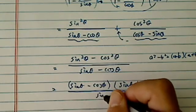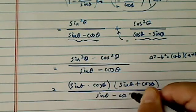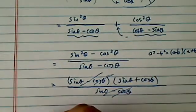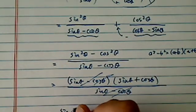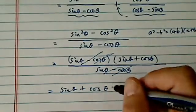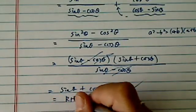The reason I want to split it up, because I see on the bottom, I have one of the terms I can easily cancel. Okay, so all I have left is sine theta plus cosine theta, which is exactly what we needed to prove, because this is equal to the right-hand side.